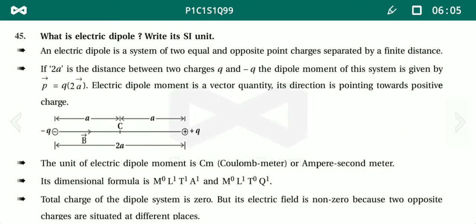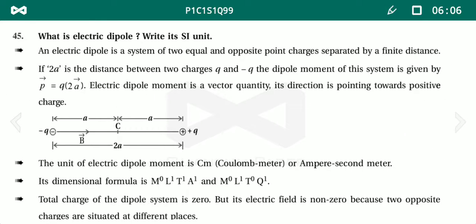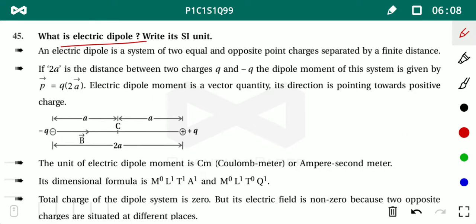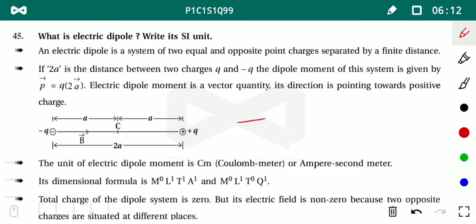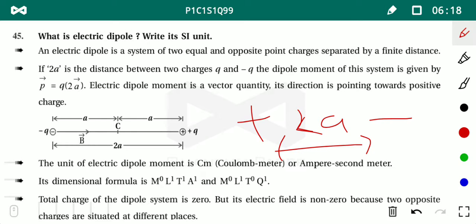Next, we come to electric dipole. What is an electric dipole? You take two poles — one positive and one negative charge — and fix a specified distance between them. Whatever is created from this arrangement is what we call an electric dipole.